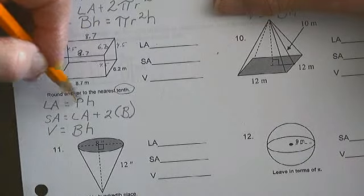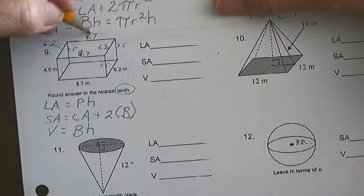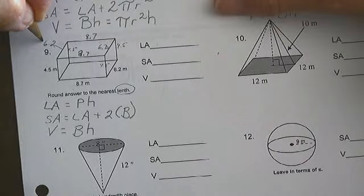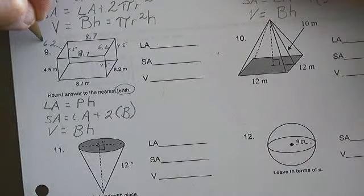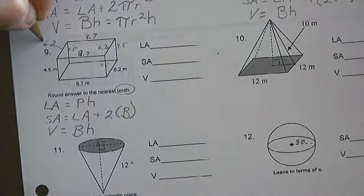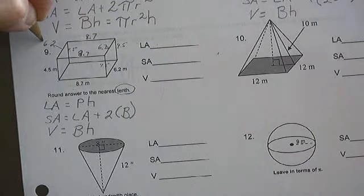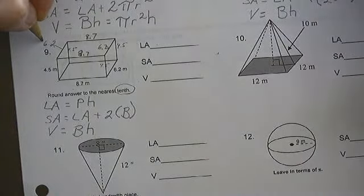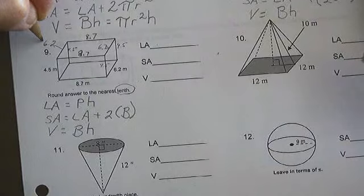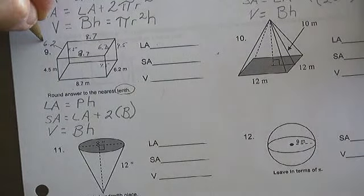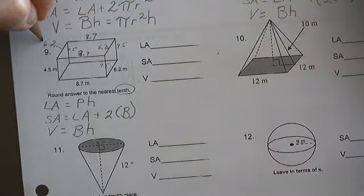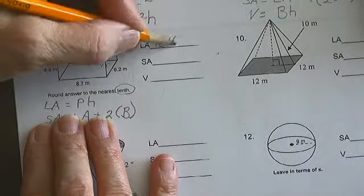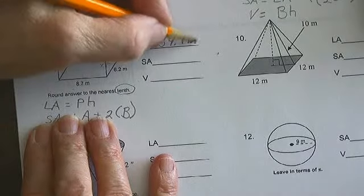My perimeter is 8.7 plus 6.2 is 14.9 times 2, 29.8 times my height, which is 4.5, that gives me a lateral area of 134.1 square meters.